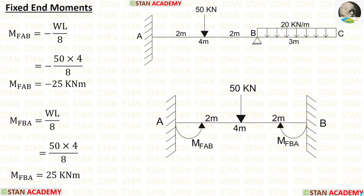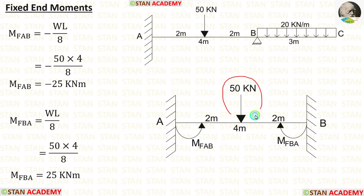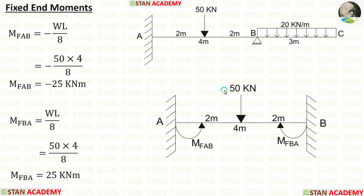Now we are going to find the fixed end moments. There is no need to calculate fixed end moments for the overhanging span; only calculate them for span AB. In span AB, there is a point load of 50 kN at the center. The formulas are minus WL/8 and positive WL/8. With W = 50 and L = 4, we get MFAB and MFBA.